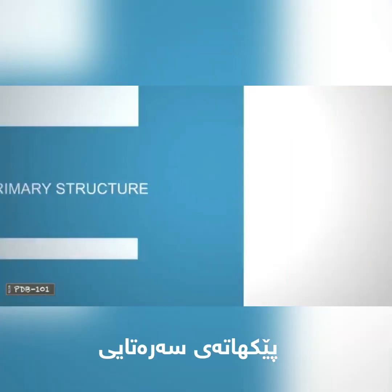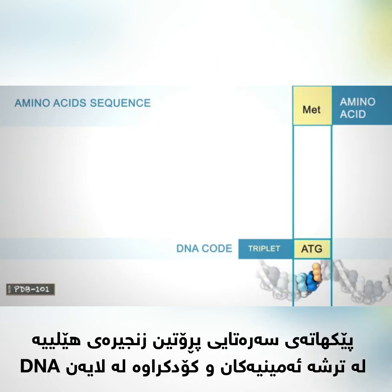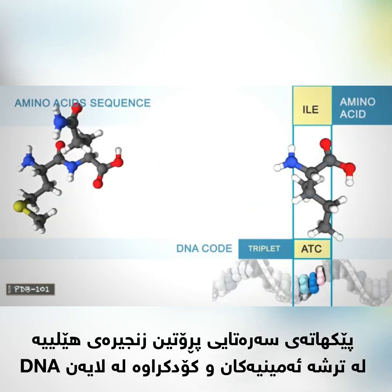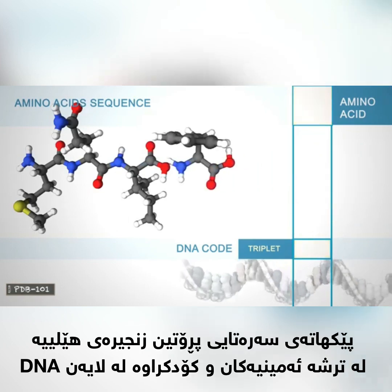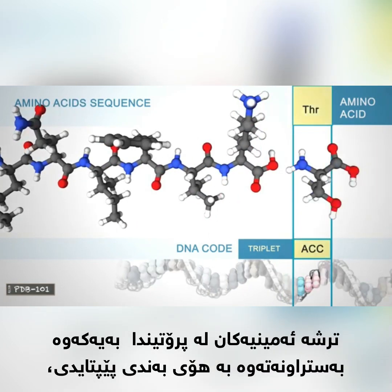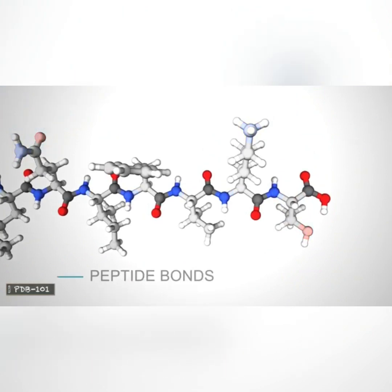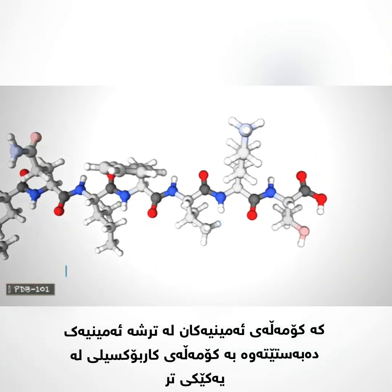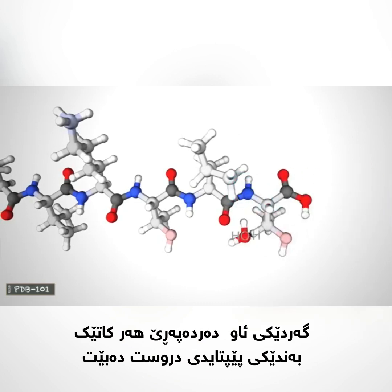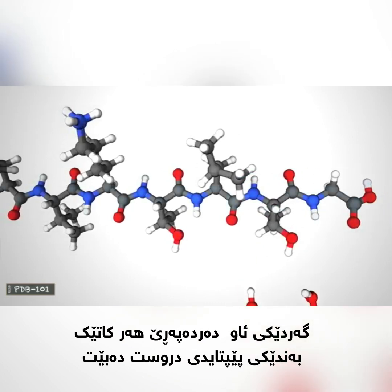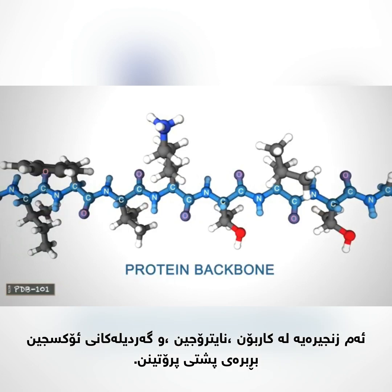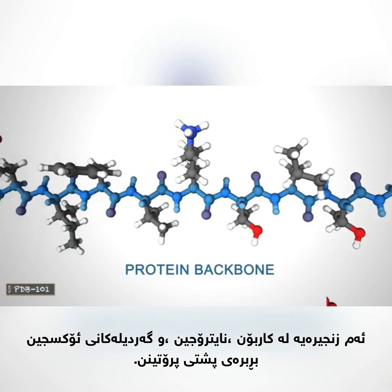Primary structure. The primary structure of a protein is the linear sequence of amino acids as encoded by DNA. The amino acids in a protein are joined by peptide bonds, which link the amino group of one amino acid to the carboxyl group of another. A water molecule is released each time a peptide bond is formed. This linked series of carbon, nitrogen, and oxygen atoms is the protein backbone.